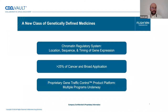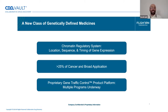We're looking to pioneer a new class of genetically defined medicines. The chromatin regulatory system at a high level is responsible for what genes get expressed, when they get expressed, and the relative order of genes that are expressed. Initial analysis of public data sets has indicated that 25% of cancer tumors have a mutation in one or more of the components of this regulatory system. So it is potentially a broad class with a lot of opportunities.